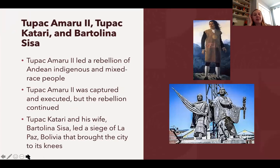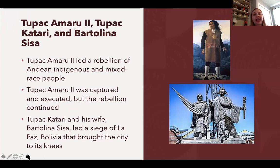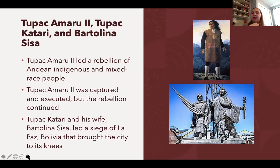The next major rebellion is perhaps the most famous: the rebellion of Túpac Amaru II. He was a mestizo who led a rebellion of Andean indigenous and mixed-race people against the Bourbon reforms. He was captured and executed, but the rebellion continued and his legacy lived on. His followers Túpac Katari and his wife Bartolina Sisa led a siege of La Paz that brought the city to its knees, making Spanish settlers there fearful of the indigenous populations — making them wary of seeking independence from Spain.